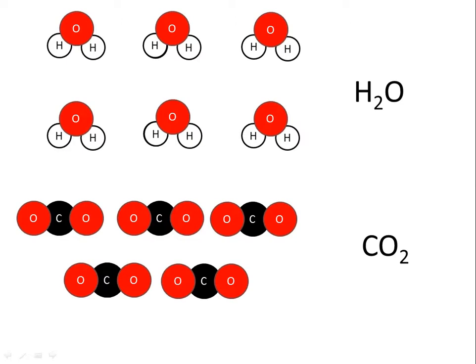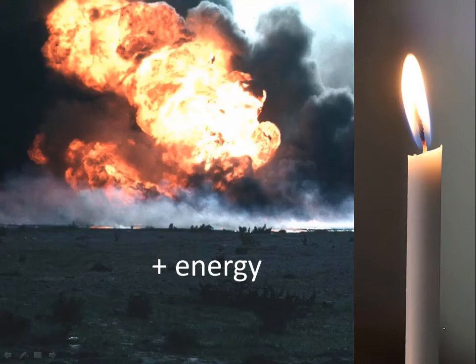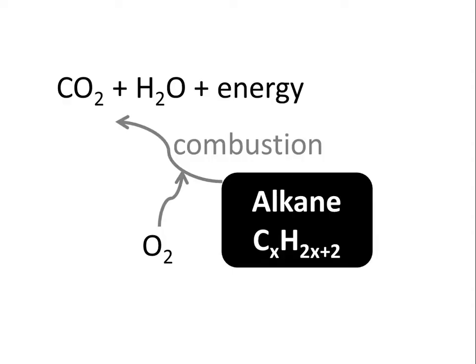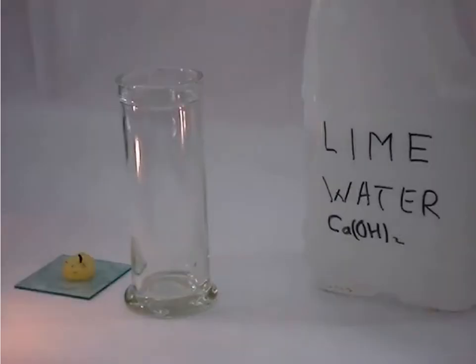So we have two products: water and carbon dioxide. And of course, we also have the product of energy, which is the whole reason why we do this combustion reaction. That's why alkanes are so valuable to us. Because by burning them, we get energy that we can use, for example, in our vehicles, or even if it's just for lighting when we don't have electricity. So the products of combustion of alkanes are carbon dioxide, water and energy.